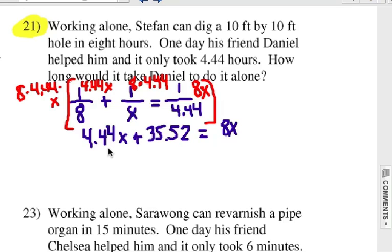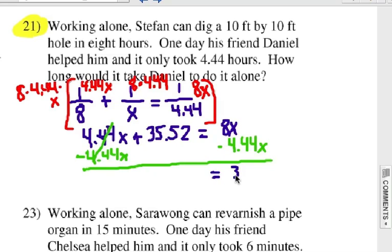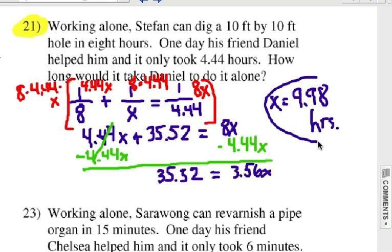Alright, let's get all the X's on one side and see if we can solve this thing. So a good little shortcut or a rule to remember is keep the higher X alone or leave it alone and get rid of the other one by subtracting. So we're going to subtract each side by 4.44X. And so here I have 8X minus 4.44X. That's going to be 3.56X. Drop down my 35.52. And I'm going to divide each side by 3.56. And it's going to give you my answer. X equals 9.98 hours. Almost 10 hours just by himself. Daniel takes him almost 10 hours.